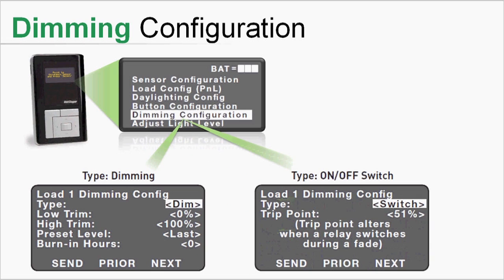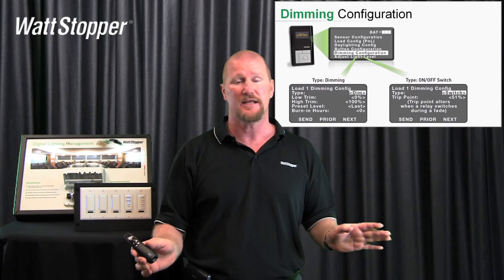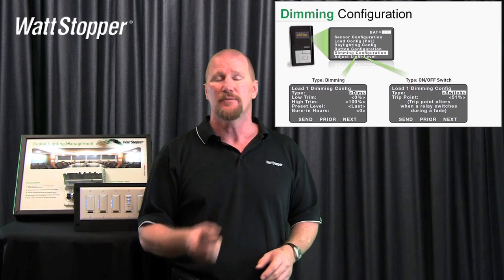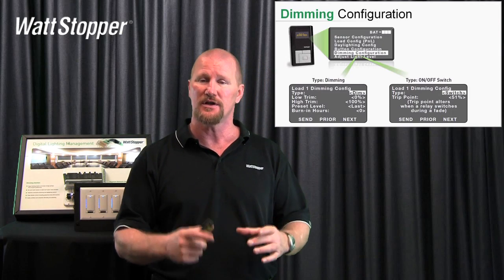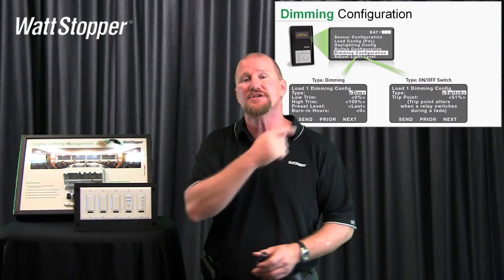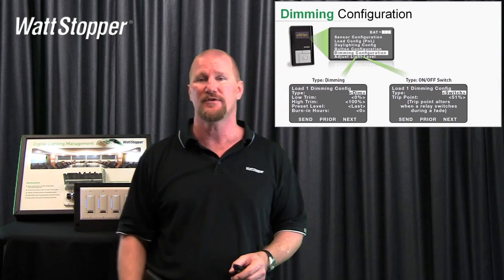Now, if your load type is a switched load, or if you change load type from dim to switch, it'll present this next screen. This screen just says: now I'm a switched load, and as a switched load my trip point is 51%. Remember we talked about trip point — so if I'm trying to ramp up or down a switched load, at 51% on the way up I'll turn on, and anything below 51 I'll turn off. This is where you change it. You don't have to change it — it works just great out of the box. But it is important if you have a switched load that you're going to run off one of these dimming room controllers to change it to a switched load so that the behavior is what you expect.